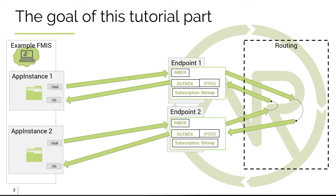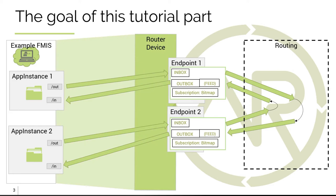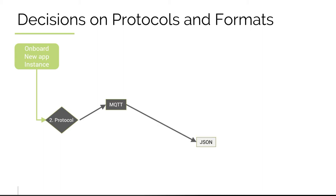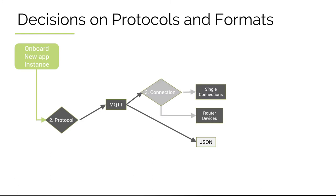We want to use a router device so that we have one common MQTT connection. A short recap on decision-making when setting up your application: if you onboard a new application, you have to decide which protocol to use. In our case we want to use MQTT, which means we use JSON as a data format. We still have to decide on the connection type — single connection or router device — and we will use a router device.